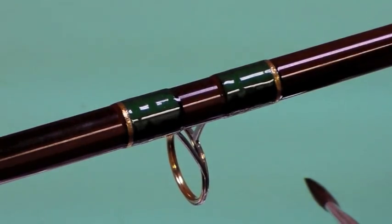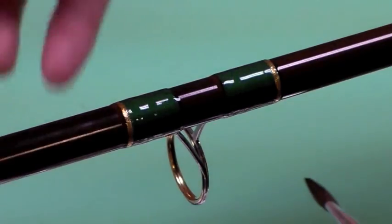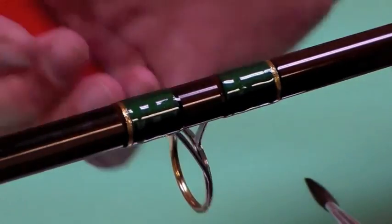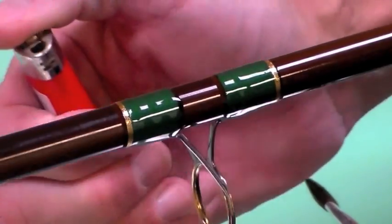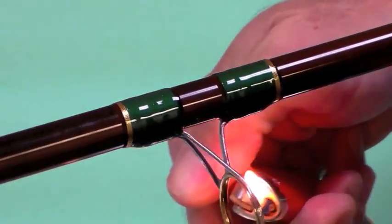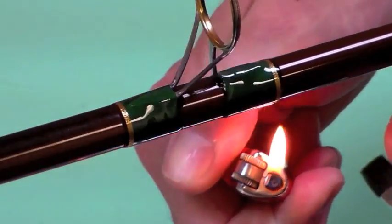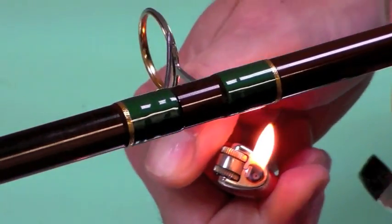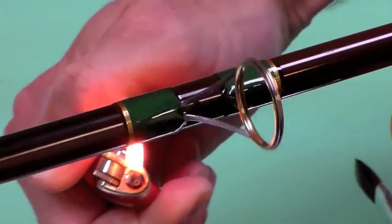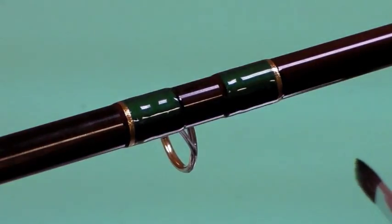Now let's say you have a few bubbles that got in there. We don't really have any here, but if you did, this is all you need to fix it with. Keep the flame low. You're not trying to cook the finish. You're just momentarily going to warm it just enough to thin the finish so that air will expand and come out.